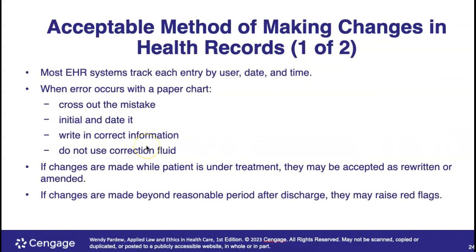We talked about changes in medical records. Most EHR systems track each user, their date, and their time when they put information in the record. When those changes are tracked, you can hold people accountable for the mistakes they make, and you can cross out a mistake, initial and date it, and correct it.